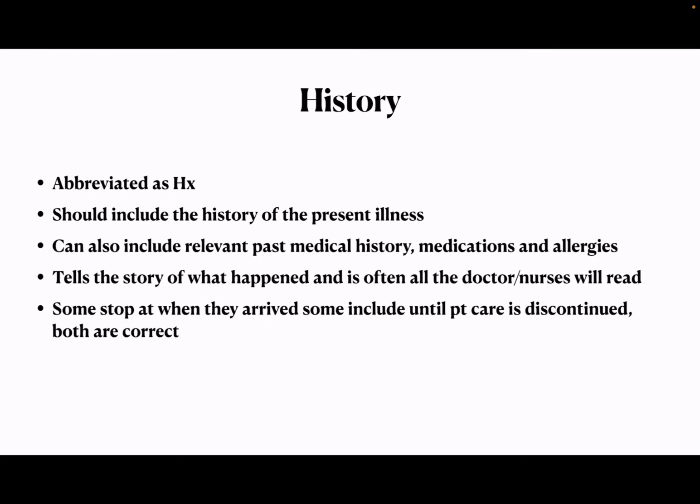They don't want to dig through page after page of state-required data, billing stuff. They're really looking for this narrative so they can read about the care that happened and find out what went on. So the way some people were taught: the history of present illness goes from the event when it started until you arrive on scene, and then everything after that is treatment. A tip that I was given in documentation classes that really helped me: include everything — the history of present illness for the doctor should include everything from the event until you get to the doctor and turn patient care over.